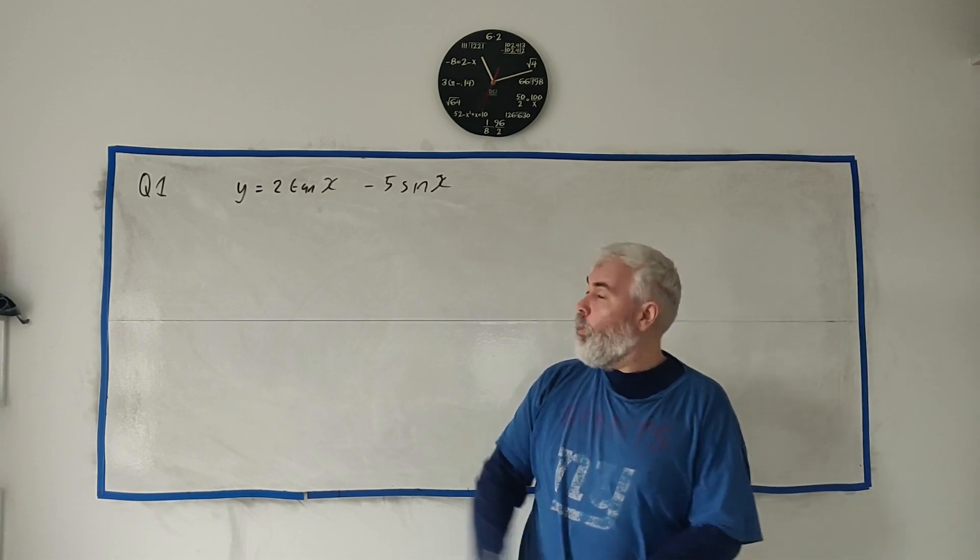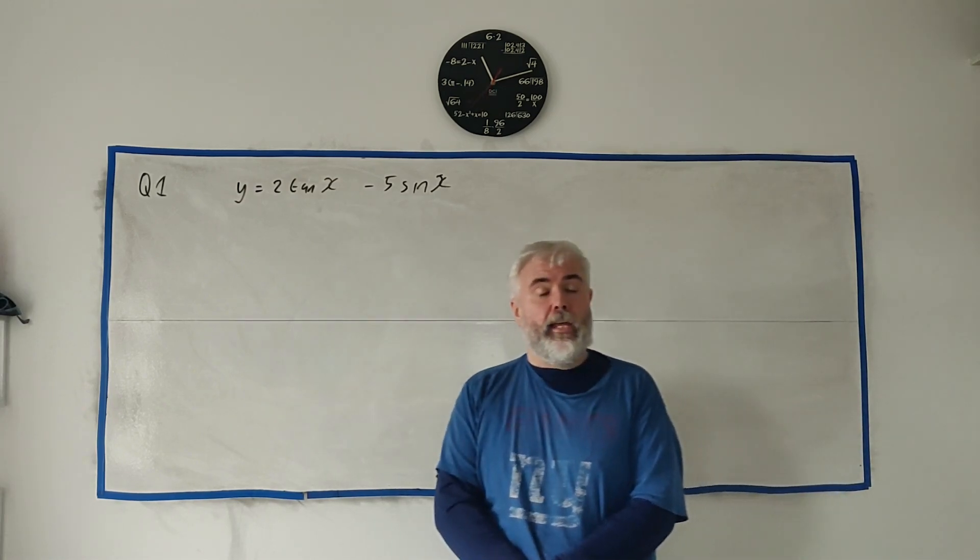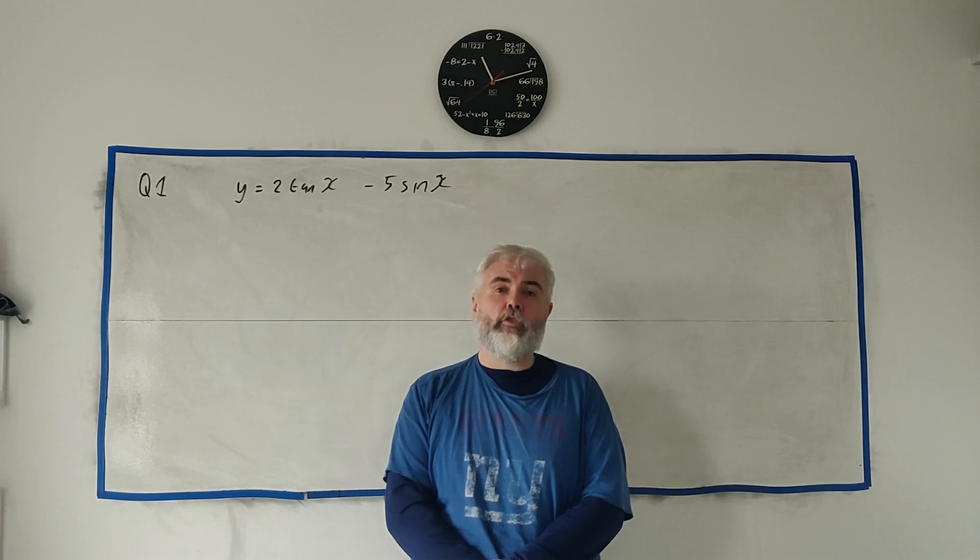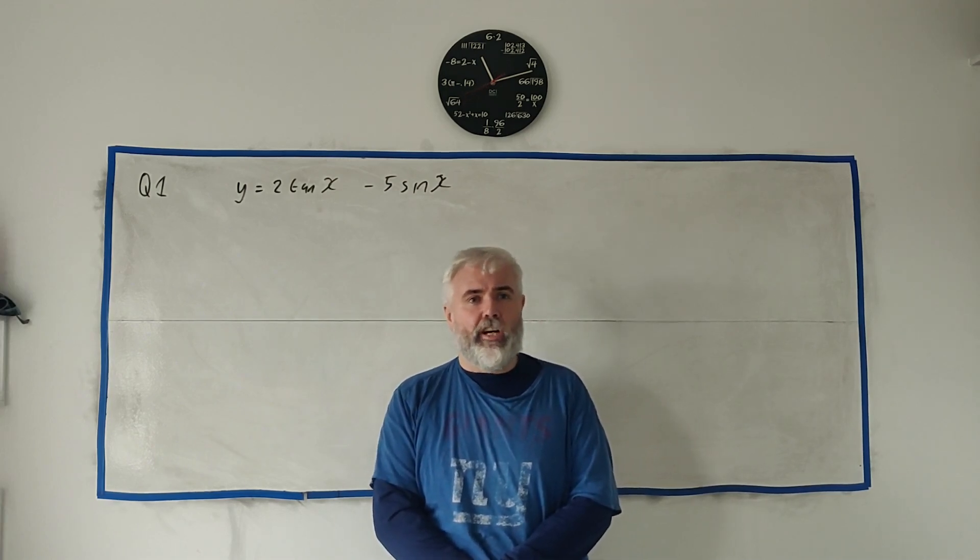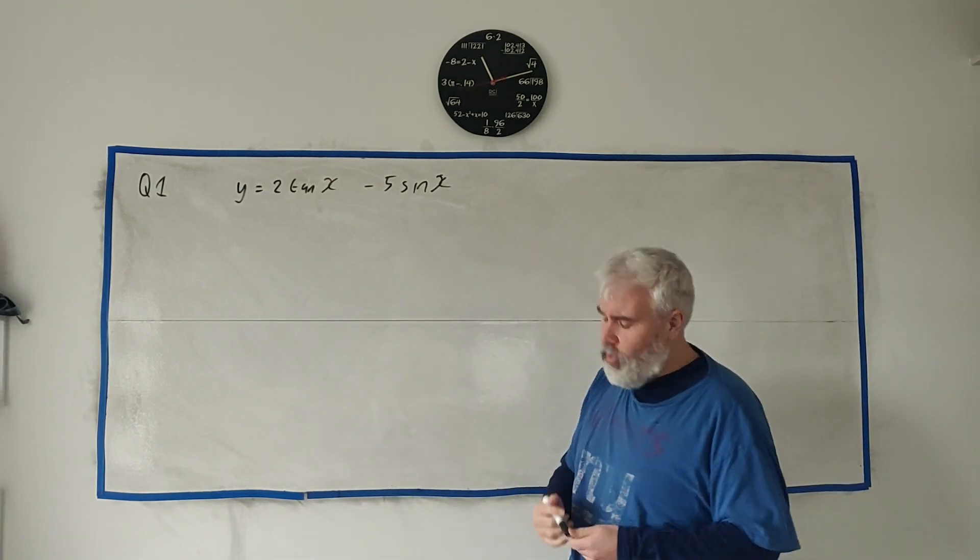In question one we're given this trigonometric equation and we're asked to find the x-coordinate of the stationary point. So how do we do that?